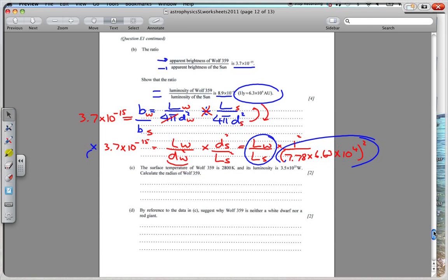Now looking at the next question here, we are told that the surface temperature of Wolf 359 star is 2800 Kelvin and its luminosity is 3.5 times 10 to the 23 watts. Calculate the radius of Wolf's star. So I hope you would straight away think of this formula, that the luminosity is equal to Stefan-Boltzmann's constant times the area times T to the 4. We need to change this around obviously. This is going to be the luminosity divided by Stefan-Boltzmann's constant, divided by T to the 4, gives me the surface area.